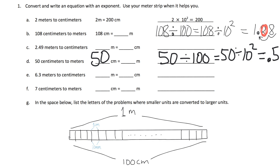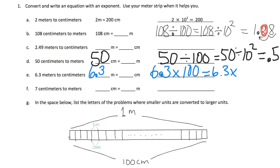Let's do problem E. Problem E says 6.3 meters. We're going to write in 6.3, and if we want to turn that into centimeters, that means we're going to have a lot of centimeters because there are 100 centimeters that fit in each of these meters. So that means we're going to do 6.3 times 100, which is 6.3 times 10 squared, which means our answer is 630 because our decimal is going to move two places to the right.